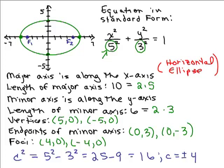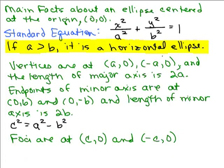So now we're going to summarize this for any ellipse centered at the origin. All right, so here are the main facts about an ellipse centered at the origin. Here's the standard equation, the standard equation for an ellipse centered at the origin. So first we're going to talk about the horizontal ellipse which is like the one we just did. It's horizontal if the number under the x is bigger than the number under the y. So if a is bigger than b, it's a horizontal ellipse.